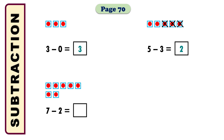In the next math it says 7 minus 2 equals what? I am taking 7 boxes. Among the 7 boxes I need to cross 2 because it says minus 2 — so I am crossing 2 among the 7. The answer will be 5. I have taken 7 boxes, crossed 2 among them, and we can see that 5 boxes remain — so the answer is 5.